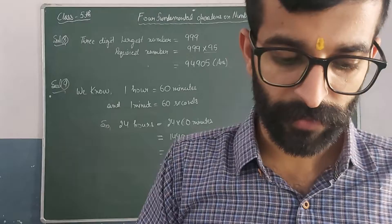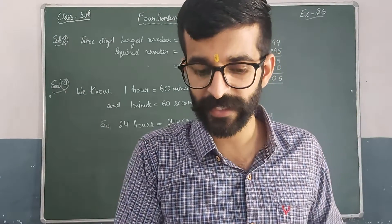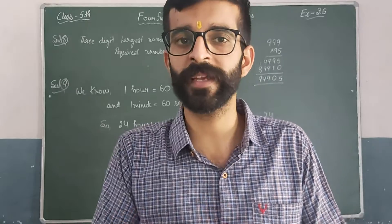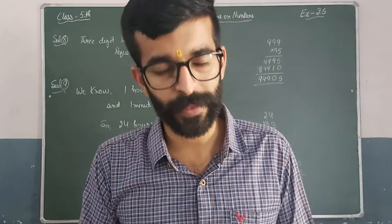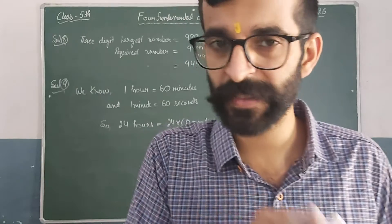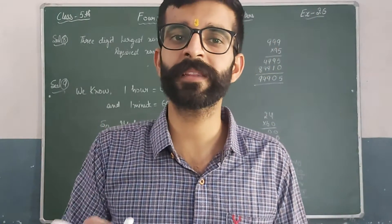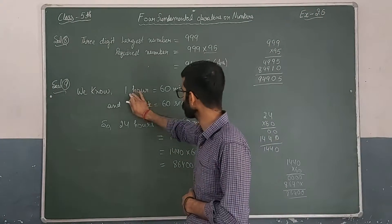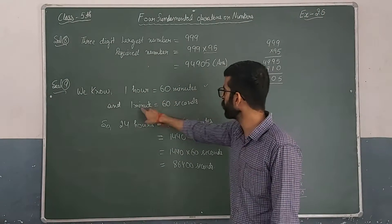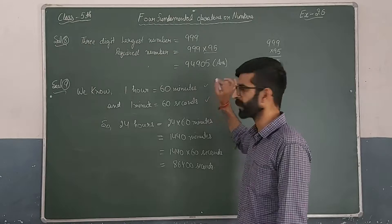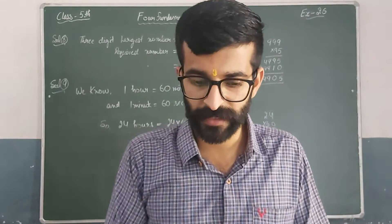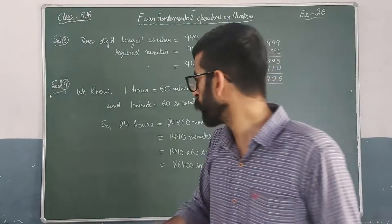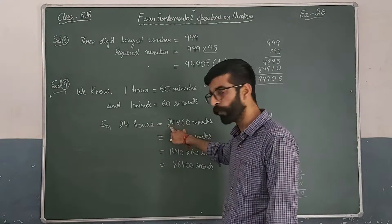For question 9, you are given: how many seconds are there in 24 hours? We know that one hour means 60 minutes, and one minute is equal to 60 seconds. So to convert 24 hours into seconds, 24 hours equals 24 multiplied by 60 minutes.